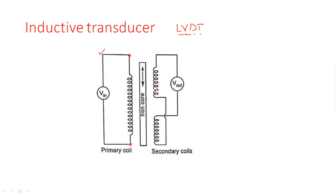On the secondary side, two secondary coils are used — coil 1 and coil 2. In between the primary and secondary windings, a soft iron core is placed, which can be displaced in the upward or downward direction. The iron core's purpose is to develop flux linkage from the primary winding to the secondary winding.